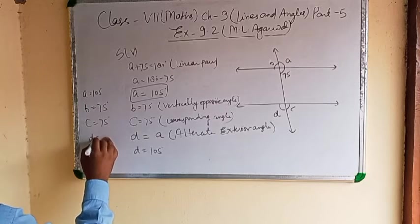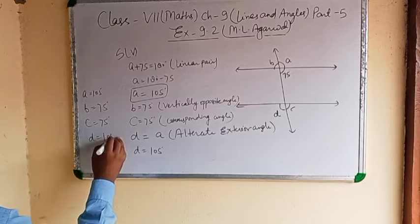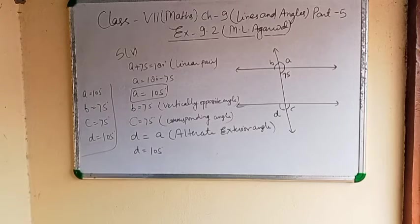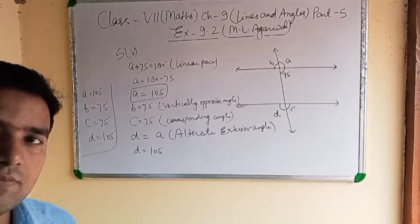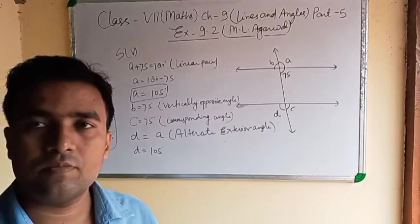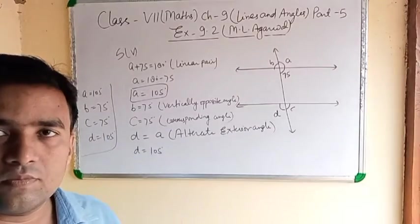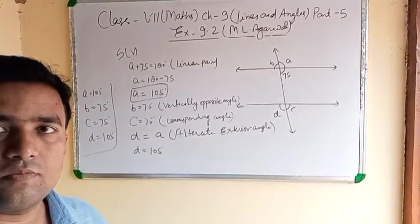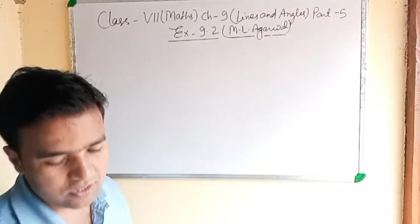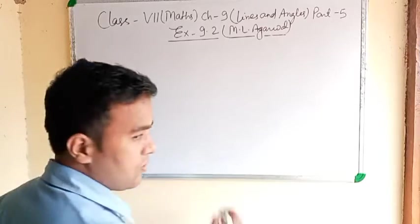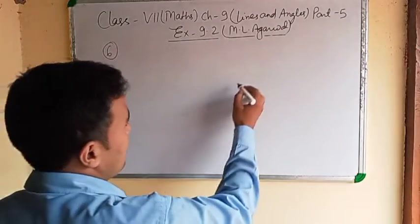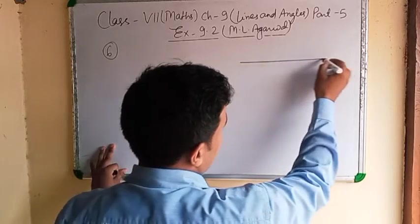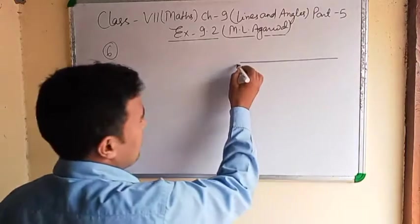d equals 105 by alternate exterior angle. So the answers are: a equals 105, b equals 75, c equals 75, d equals 105.